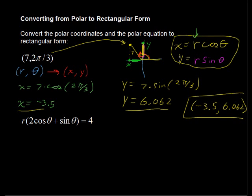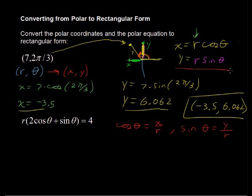We've already defined what x and y equal, and that's going to be the same whether it's just one point or an equation. So we can arrange that a little bit and say that cosθ = x/r, and sinθ = y/r.